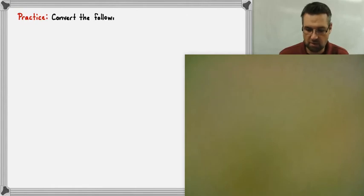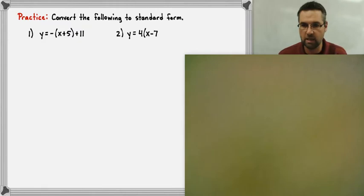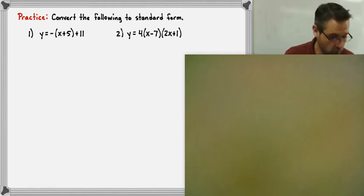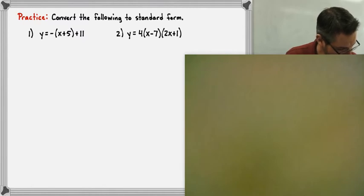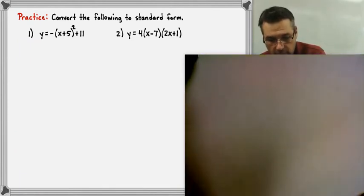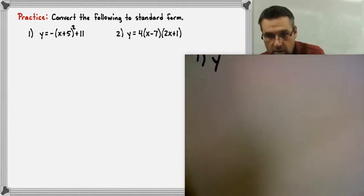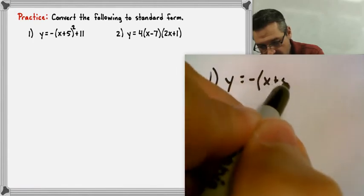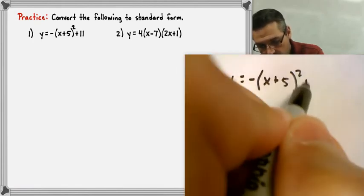Here are a few practice problems I'd like you to do on your own. Pause the video, see where you can get, and then come back and check your work against mine. Before we do that, there's a typo — this should say 'squared.' Alright, so for number one, we have y equals negative (x plus 5) squared plus 11.